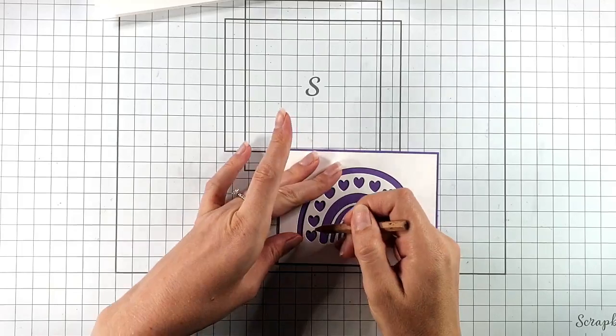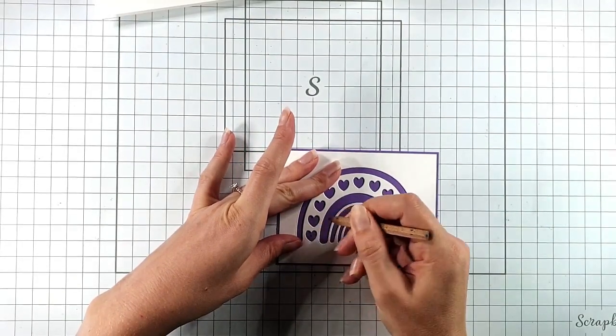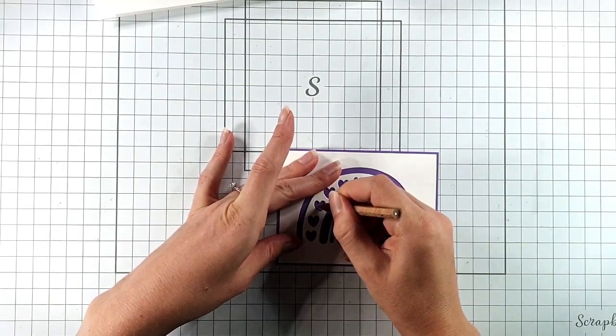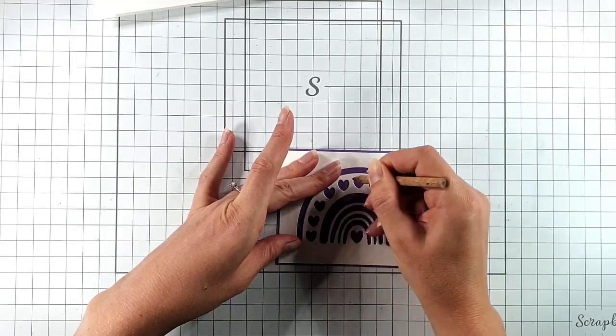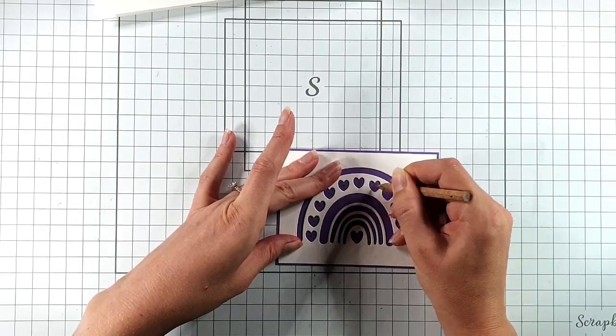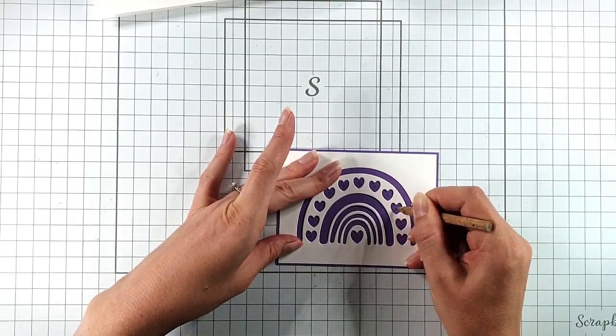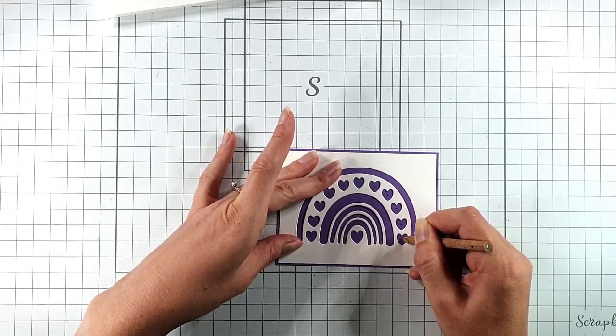So the first thing I'm going to do is put a little dot in the middle of each heart onto that purple cardstock so I can get an idea of where the hearts are so I can decide where my lights are going to go.